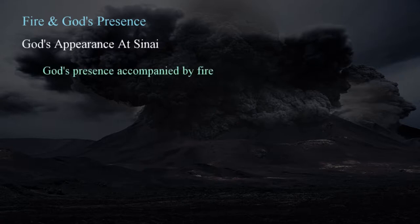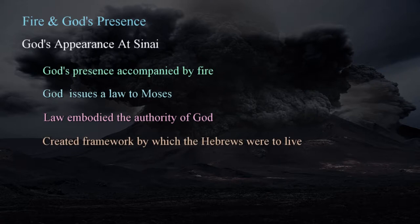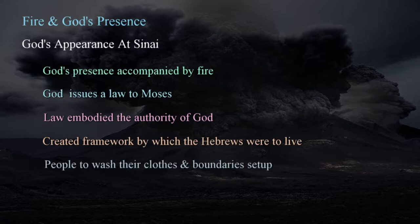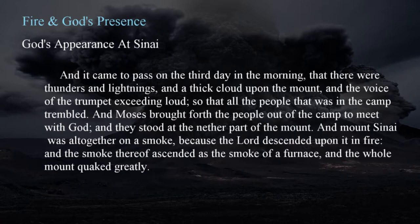At Sinai, God's presence is represented by fire in a powerful display as he issues a law to Moses. This law embodied the authority of the Lord and created a framework by which the Hebrews were to live. In preparation for the Lord's appearance, Moses directed the people to wash their clothes and set up boundaries, as God was to appear to them on the third day, in Exodus 19:10-11. Anyone who touched the mountain would die, so barriers were set up, in Exodus 19:12-13. On the third day in the morning, there were thunders and lightnings and a thick cloud upon the mount, and the voice of the trumpet exceeding loud, so that all the people in the camp trembled. Moses brought forth the people to meet with God, and Mount Sinai was altogether on a smoke, because the Lord descended upon it in fire, and the smoke thereof ascended as the smoke of a great furnace, and the whole mount quaked greatly. Exodus 19:16-18.